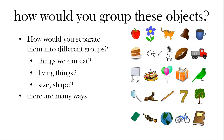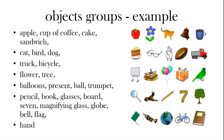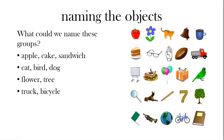So if you want to put them in groups, we could for example put them in edible — so food and drink — animals, transport, plants, toys, school items, and the hands probably by itself. So we've got these groups. How could we name them? The apple, cake and sandwich are foods; cat, bird and dog are animals; flower and tree are plants; truck and bicycle are vehicles.